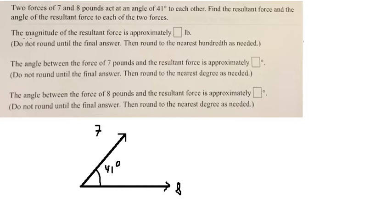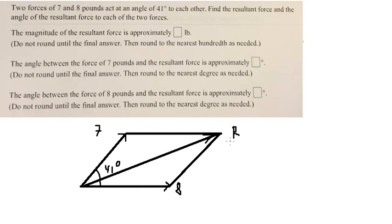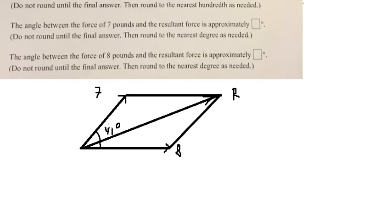The first question is to find the magnitude of the resulting force, which should be about this one. We use the formula. This is about the resultant we need to find, so I'll put capital R. The formula is R square equals seven square plus eight square plus two multiplied by seven, eight, and cosine 41 degrees.